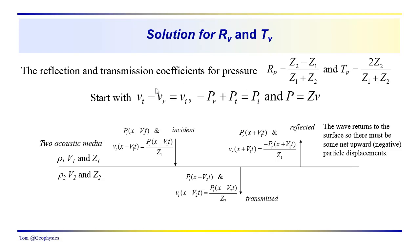We also worked with boundary conditions, which require that the sum of the particle velocities above the interface be equal to that below the interface. The same applies for the incident and reflected pressure wave disturbance — they must be equal to the transmitted pressure wave disturbance. Rearranging: p_i plus p_r equals p_t, and v_i plus v_r equals v_t. We note that the up-going wave is traveling in the negative x direction, by convention, while the downward propagating wave travels in the positive x direction.